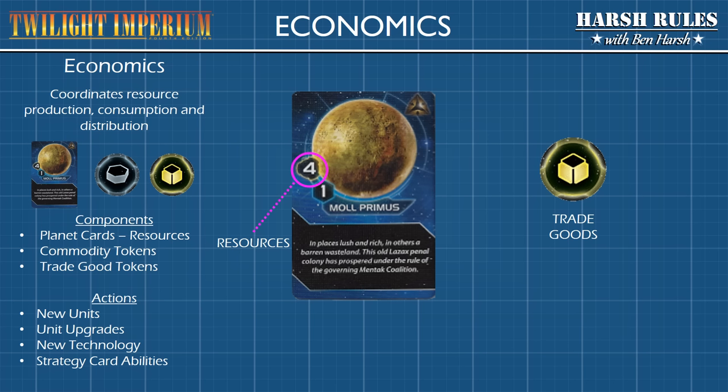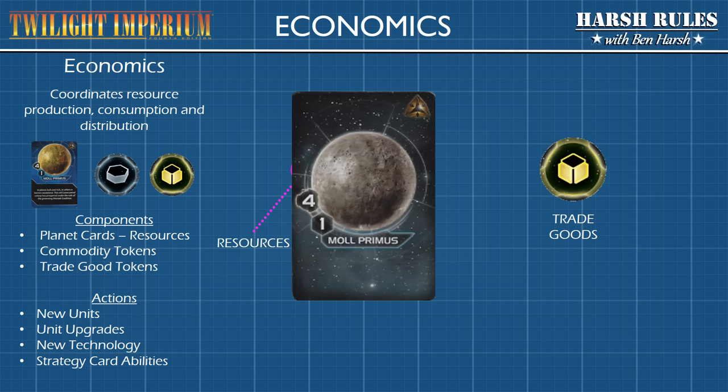Next, let's take a look at economics. In Episode 1, we touched briefly on resources during setup. Most planets generate resources that can be tapped into to build new units. The actual currency is represented by the planet card. New units can be produced at the end of a tactical action from a space dock. When a player spends a planet's resources, they flip the planet card face down. Just be aware, planet card resources cannot be spent piecemeal.